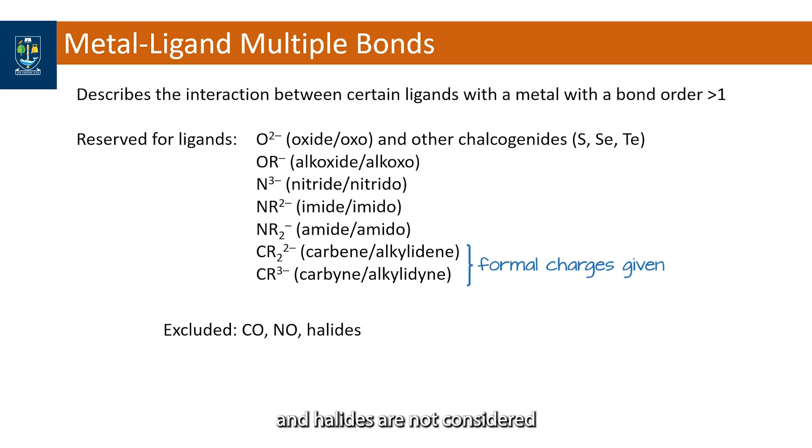Carbon monoxide, nitric oxide and halides are not considered ligands that can make multiple bonds. Although they have pi electrons to generate additional bonds, we nevertheless consider these ligands as singly bonded to a metal.